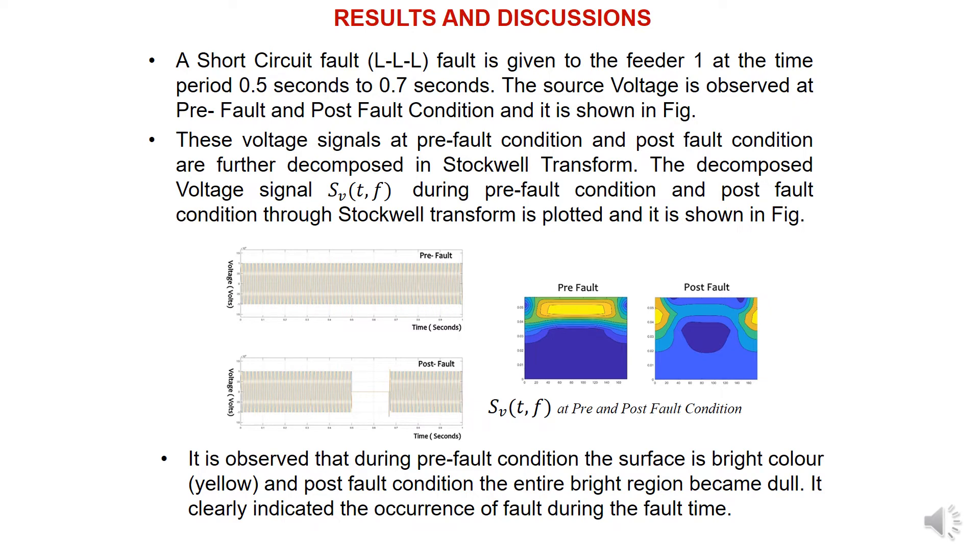You can see here on the left side the pre-fault and post-fault voltages. In the pre-fault condition, the voltage level is correct and in a good way, whereas in the post-fault condition you can see some disturbance from 0.5 to 0.7 seconds. All the voltage values from 0.5 to 0.7 suddenly got interruption. You can see some interaction between 0.5 to 0.7.